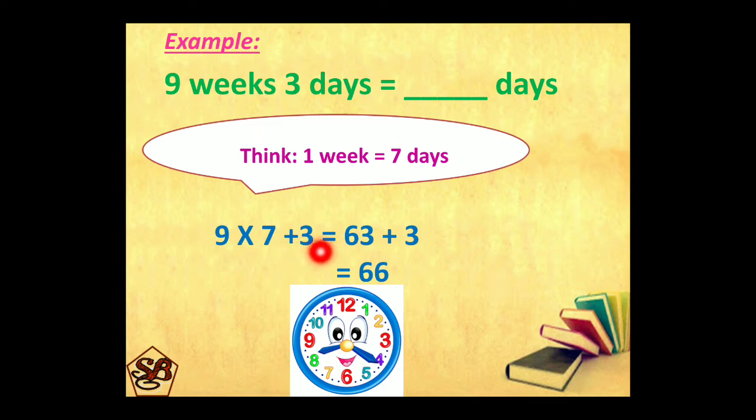plus 3. 9 sevens are 63. Plus 3 will give us 66. So, that means 9 weeks, 3 days is equal to 66 days.